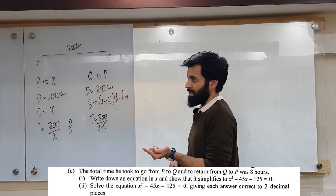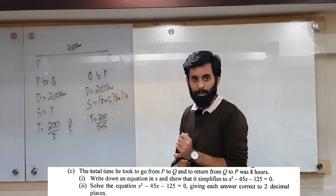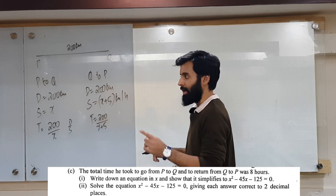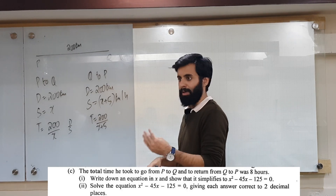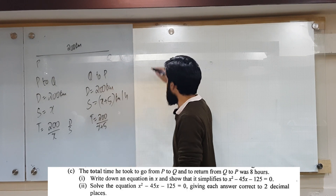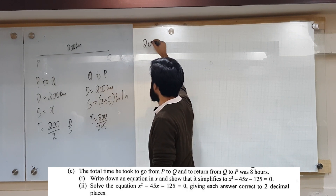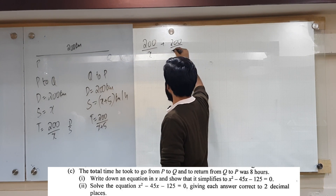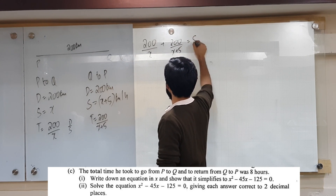Now let's see what the question has given us regarding the time. The total time — total means we are going to add the two times together. So 200 upon x plus 200 over x plus 5 equals 8.